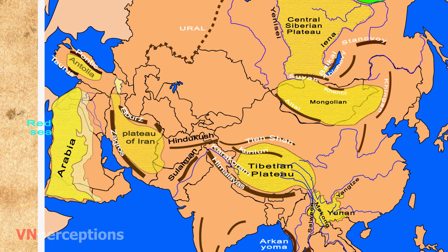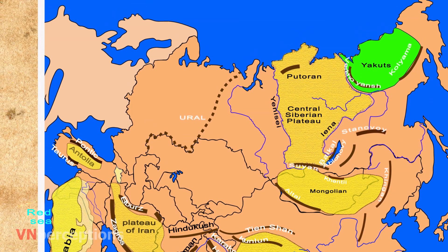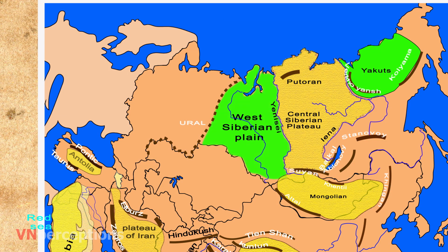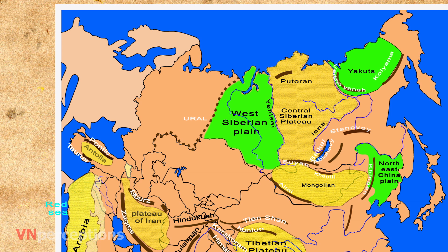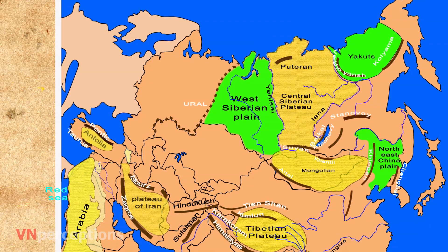Now let us learn about the plains. The first is the West Siberian Plain. It is a large plain that occupies the western portion of Siberia between the Ural Mountains to the west, the Yenisei River to the east, and the Altai Mountains to the southwest. Much of the plain is poorly drained and consists of some of the world's largest swamps and floodplains. Next is the Northeast China Plain, also known as the Manchurian Plain, located in northeast China. It lies between the Greater and Lesser Khingan and Changbai Mountains, covering 350,000 square kilometres.